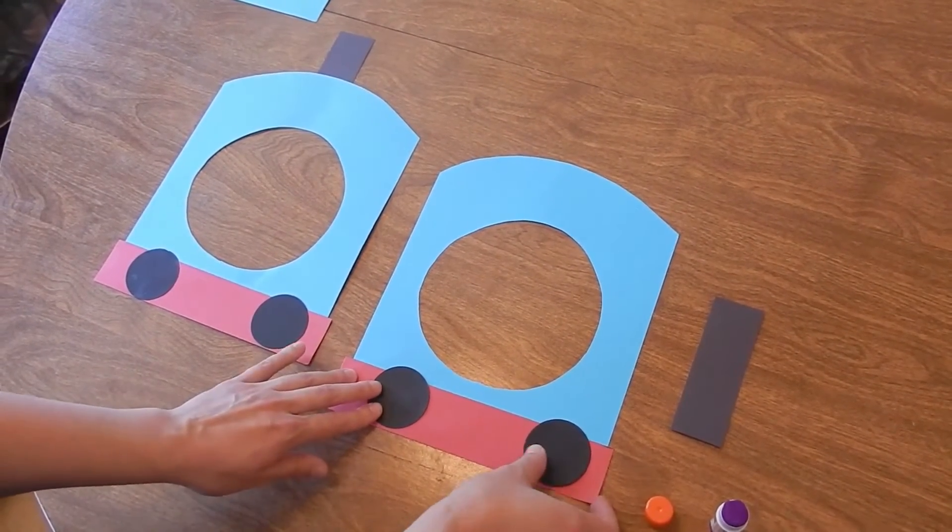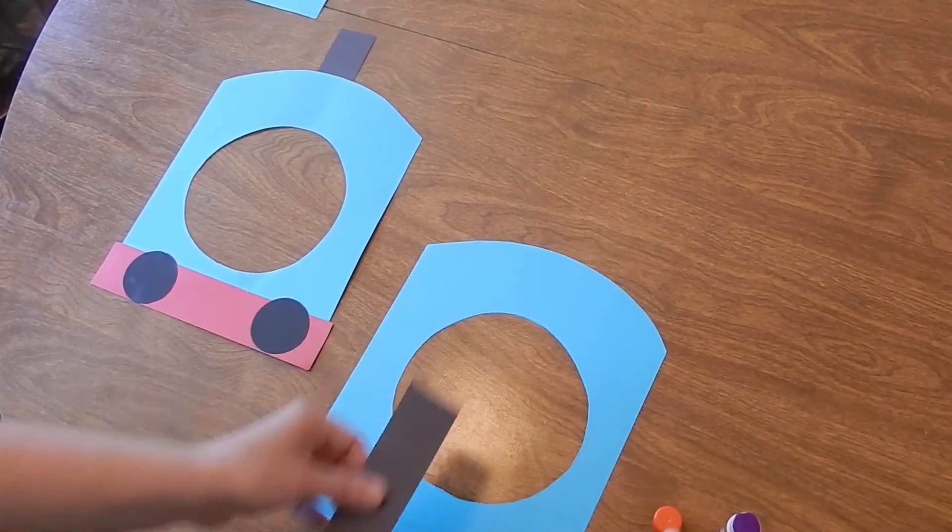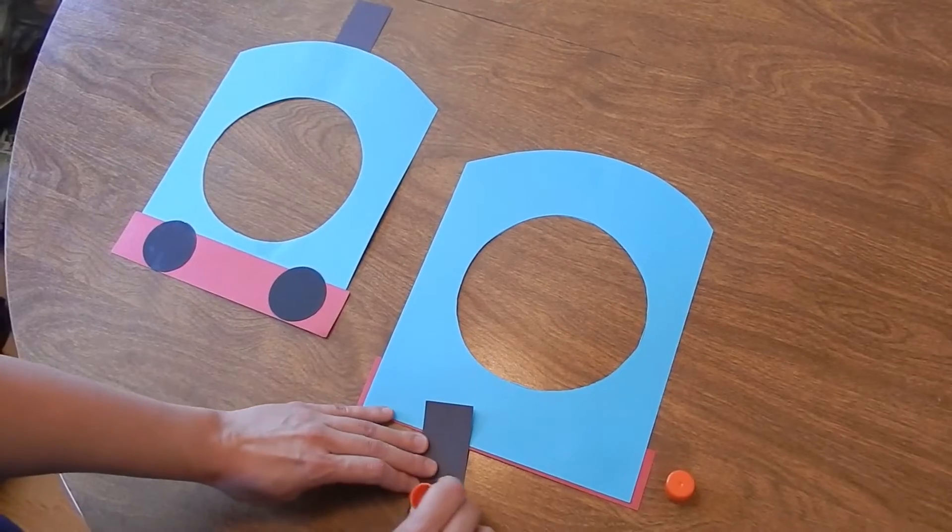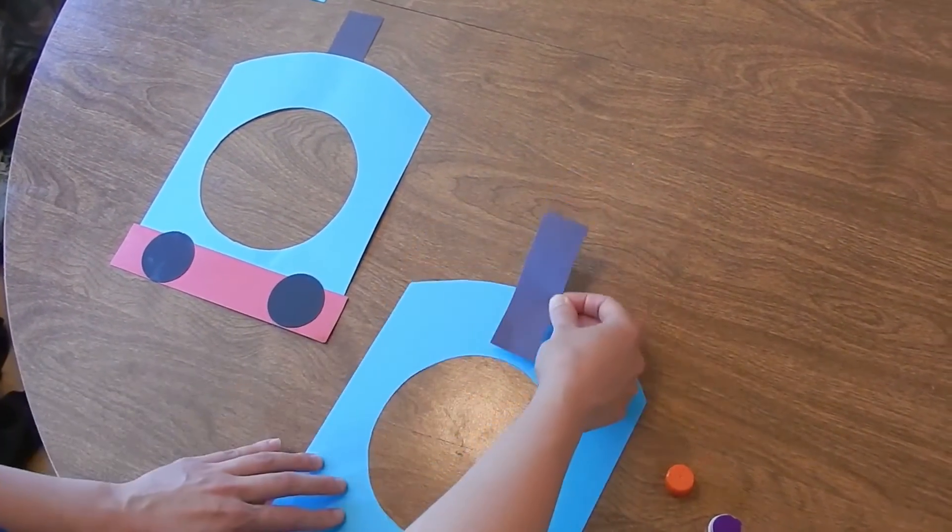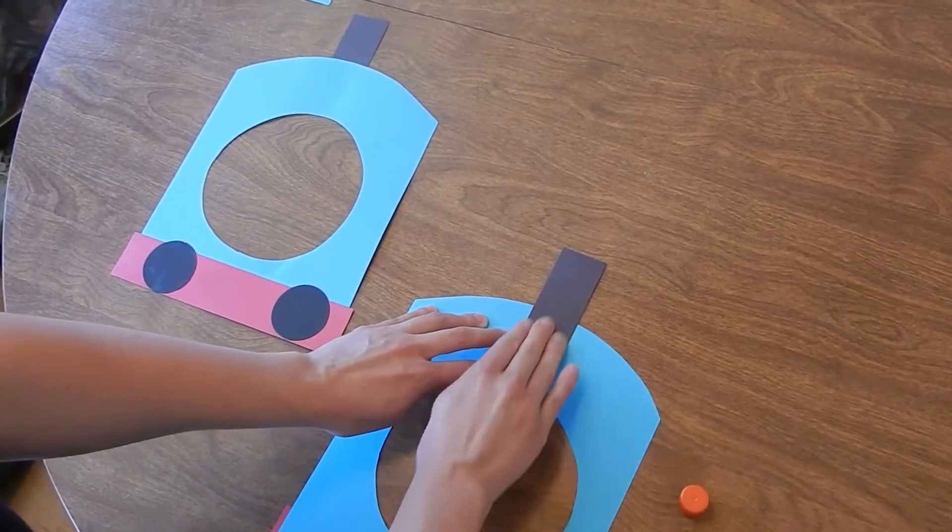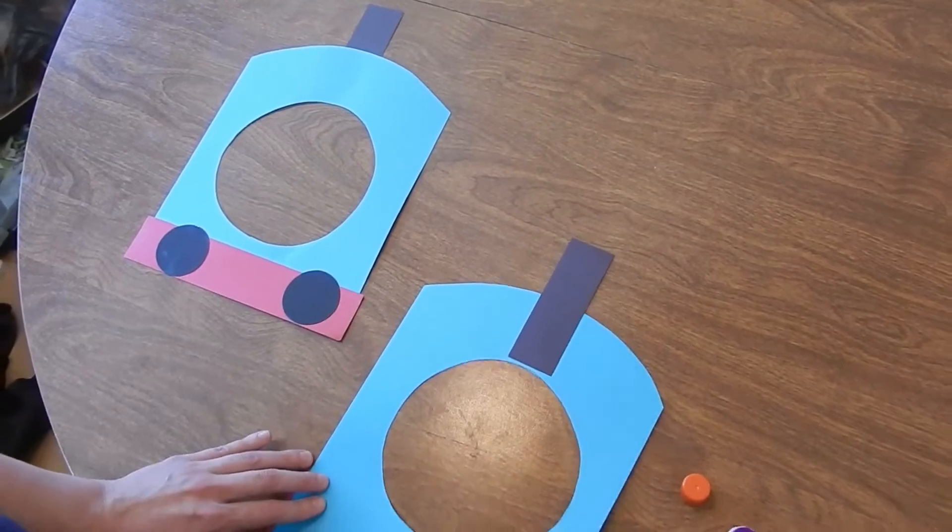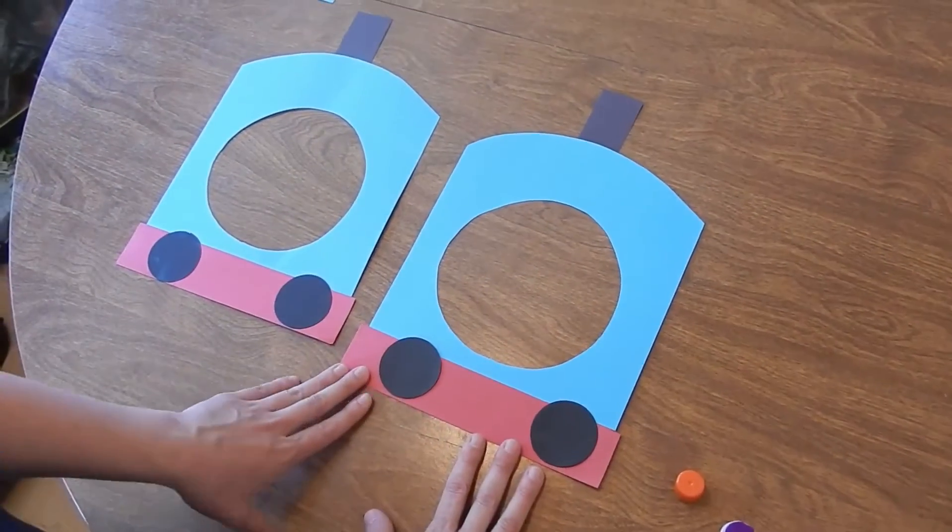And then you're going to flip your mask over and you're going to take your other piece of construction paper and you're just going to glue just a little bit at the bottom. Then you're going to glue that to about the center of your mask just like that, and when you flip it over you have your Thomas face mask.